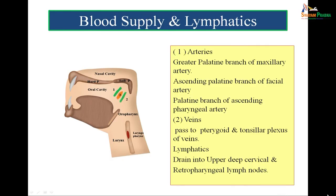The blood supply of the soft palate comes from the greater palatine branch of the maxillary artery, the ascending palatine branch of the facial artery, and the palatine branch of the ascending pharyngeal artery. Wherever you find a palatine branch, it supplies the soft palate. Veins pass to the pterygoid and tonsillar plexuses of veins. Lymphatics drain into the upper deep cervical and retropharyngeal lymph nodes. The soft palate has a good blood supply and is richly supplied by lymphatics.